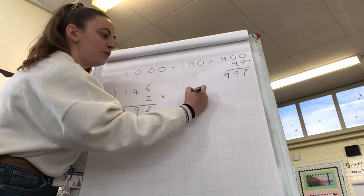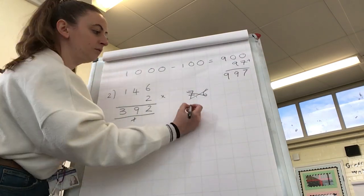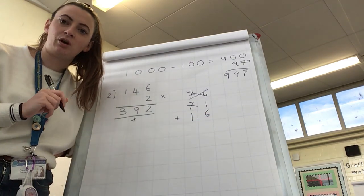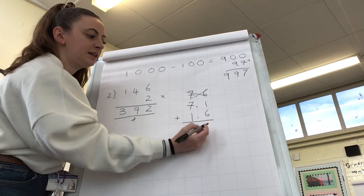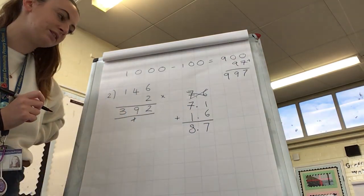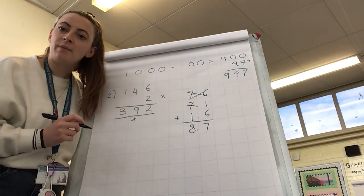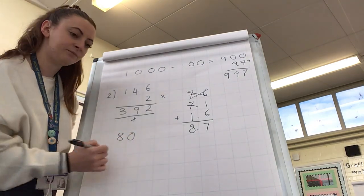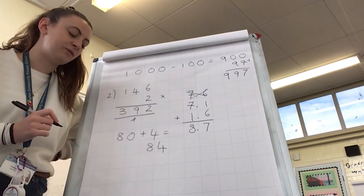Question number 3 is 7.1 plus 1.6. So for this question, you may have done it in your head. I'm going to use the column method and I'm going to make sure that I line up these decimal points. 1 plus 6 is 7. 7 plus 1 is 8, but I need to remember that decimal point still. So our answer is 8.7. Question number 4, 42 times 2. You may have used the column method for this. You may use your working out in your head, and go, right, 40 times 2 is 80. 2 times 2 is 4. Add them together, so your answer to number 4 is 84.